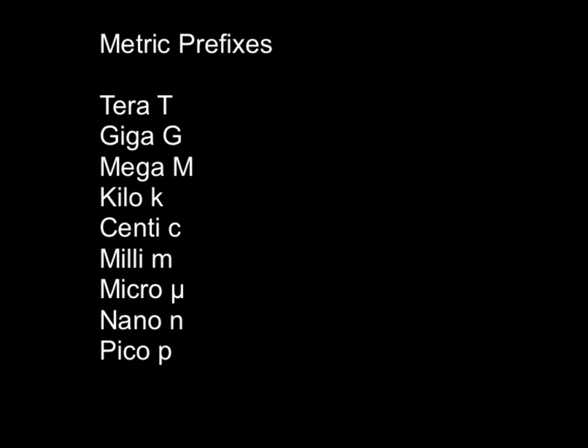So when we do metric conversions, we are generally converting from one metric unit to another metric unit. And some of these metric units have a prefix in front of them. So you have millimeters, centimeters, kilograms, grams. So how do you convert between grams and kilograms? You need to know the meaning of the metric prefixes. So these are the metric prefixes we're going to do, and each one has its own meaning.